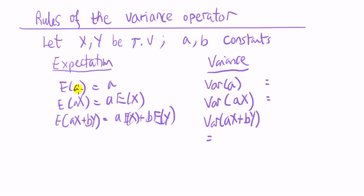So as a revision, the expectation of a constant is a constant, the expected value of a constant times a random variable is the constant times the expected value of the random variable, and this third one is showing you that the expectation operator is a linear operator.